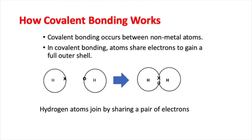Now let's look at how covalent bonding works. Covalent bonding occurs between non-metal atoms, and in covalent bonding atoms share electrons to gain a full outer shell, which is a very stable electron arrangement. In the picture we have two hydrogen atoms. Hydrogen is atomic number one, with one electron in the outer shell of each atom. When a hydrogen molecule forms, the two atoms share a pair of electrons, meaning they both have a full outer shell.